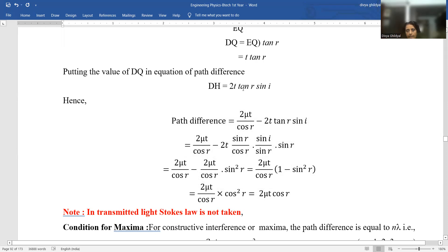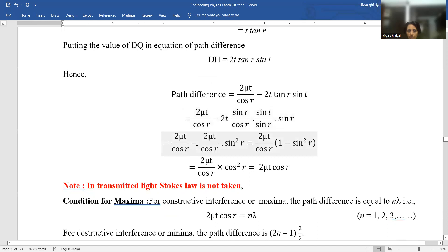Now instead of tan R, I can put sin theta upon cos theta. The path difference 2 mu T cos R minus 2 T tan R sin I. Instead of tan, put sin R upon cos R and multiply and divide this by sin R. So you get 2 mu T cos R minus 2 mu T cos R into sin square R.